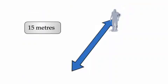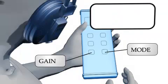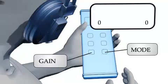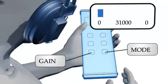Place the generator on the ground 15 metres away. Set receiver mode to 0. Set the gain at 0. Reading should now be 31,000.